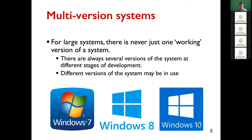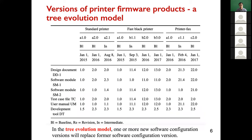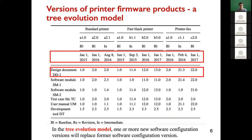We also see more complicated situations where there's not just one version. For example, for Microsoft Windows, there may be multiple versions in the market for users to use. We've seen that Windows 7, Windows 8, and Windows 10 may be used by different users at the same time — so there are several versions of the same system.